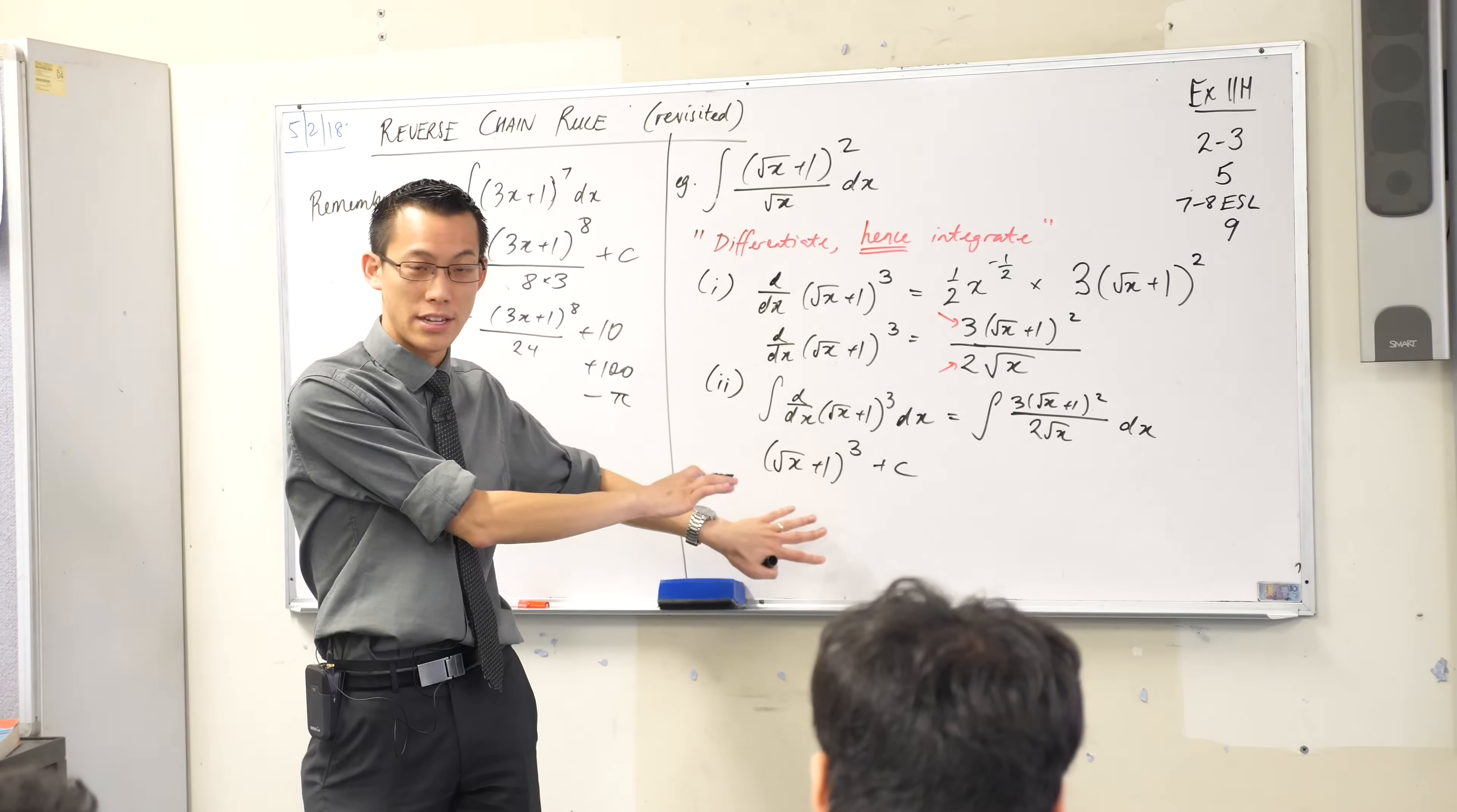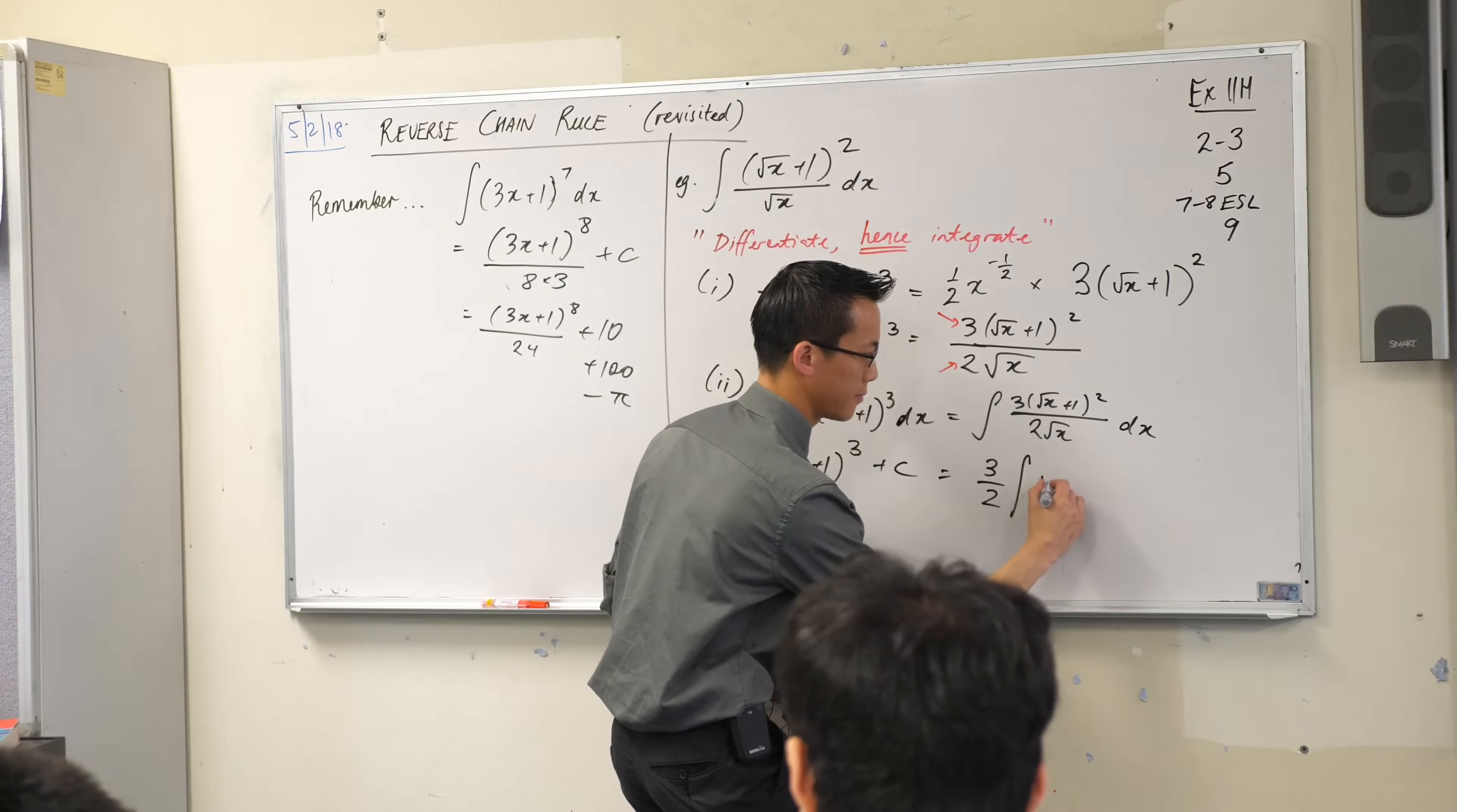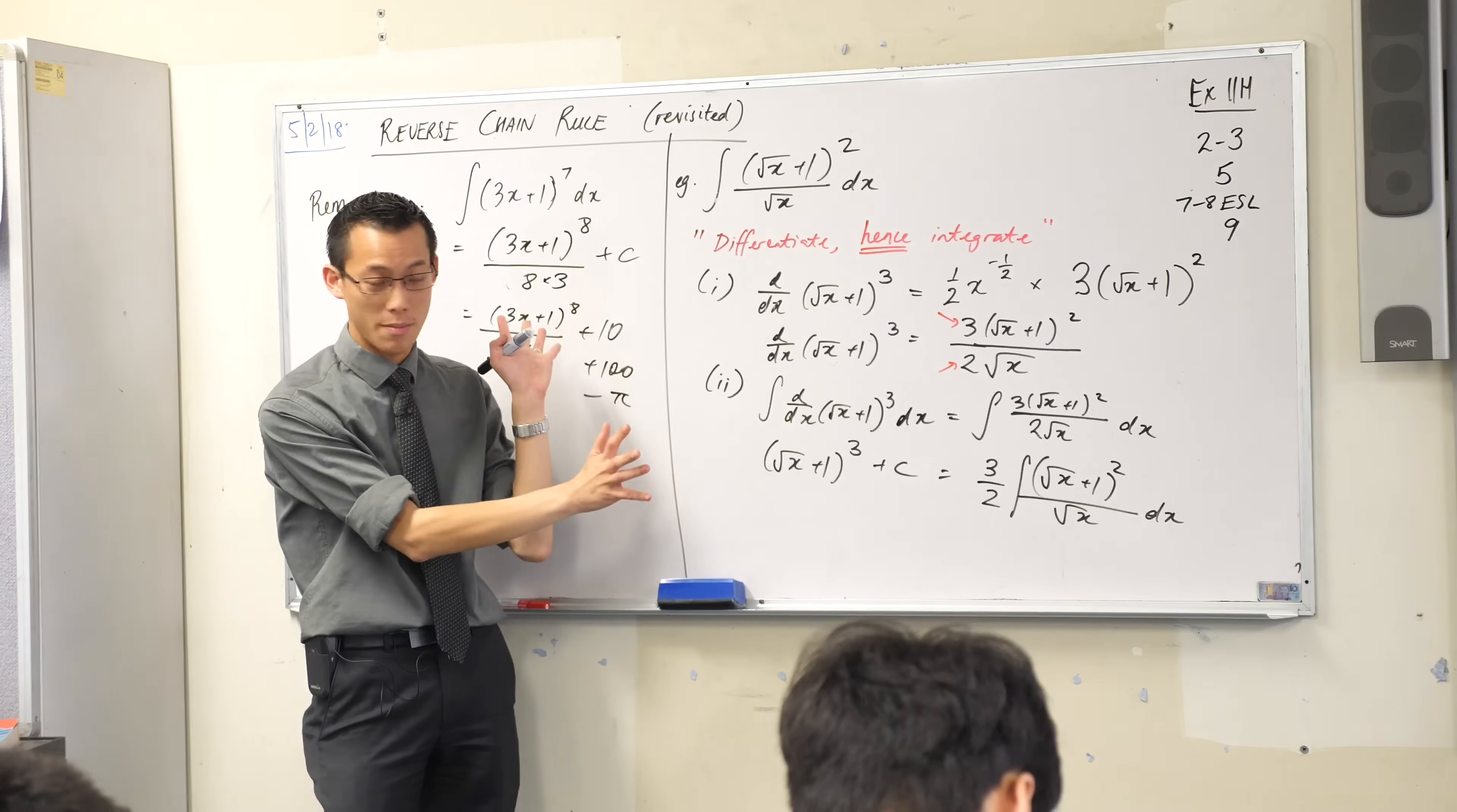Okay, on the right-hand side. I'm going to take that 3 over 2 out the front. It's just the constant coefficient. Okay, you're right with that? Does it look okay? I haven't done anything too dramatic.